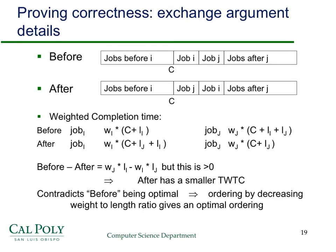The setup is: jobs before job i, then job i, then job j, then jobs after job j. We switch job i and job j. Notice that none of the jobs before i are affected — their completion times and weights are the same, so their contribution to total weighted completion time is unchanged. Similarly, the jobs after j are unaffected because their group starts at C plus the length of i plus the length of j, which doesn't change when we swap i and j. So we only need to focus on the contribution of these two jobs.